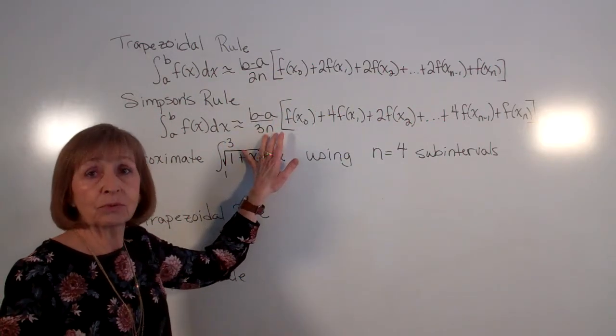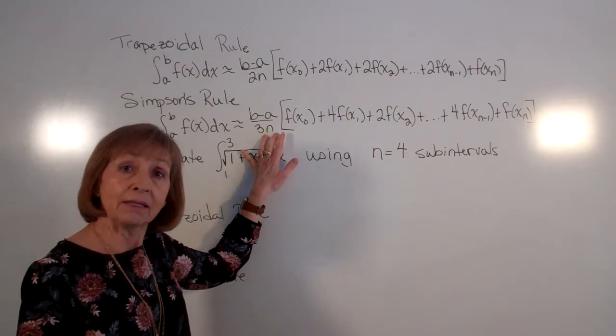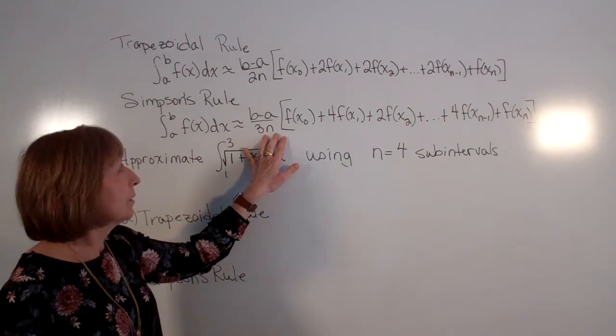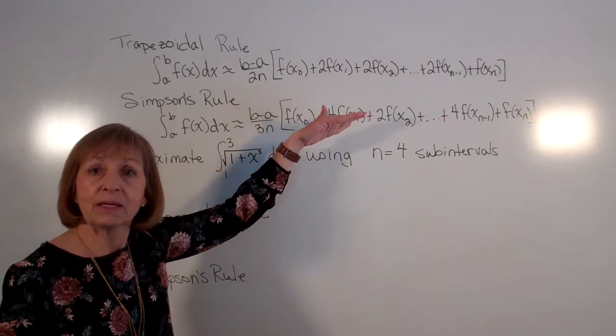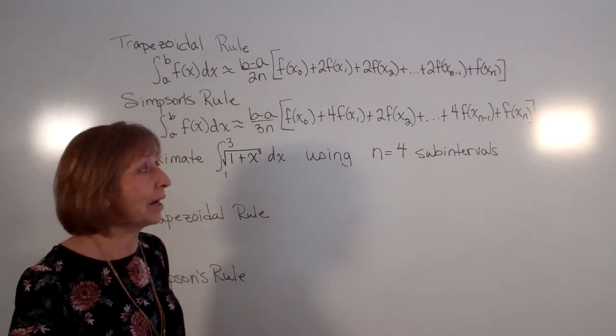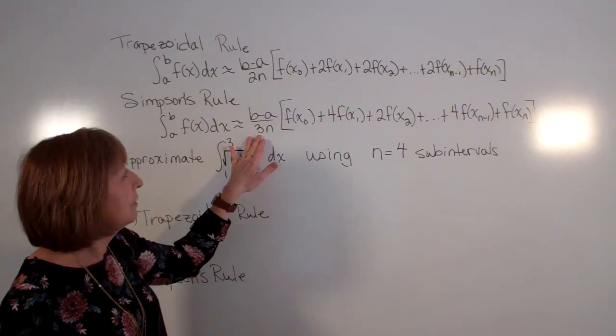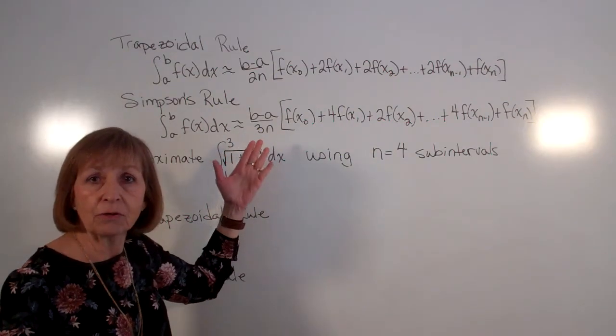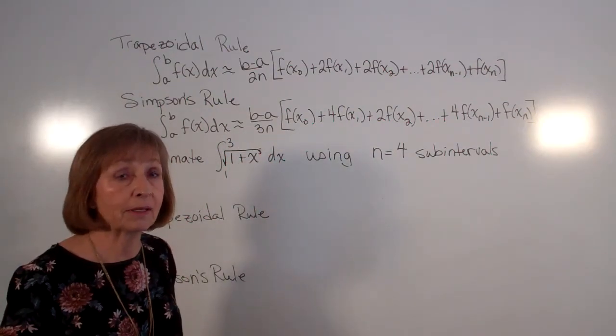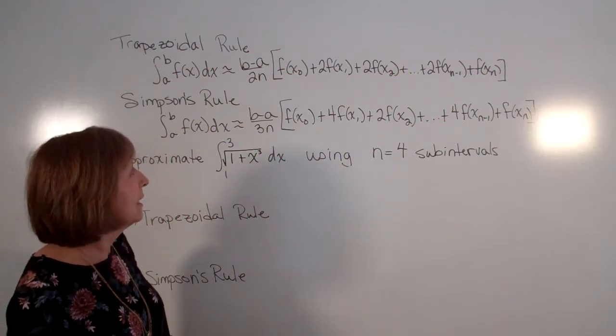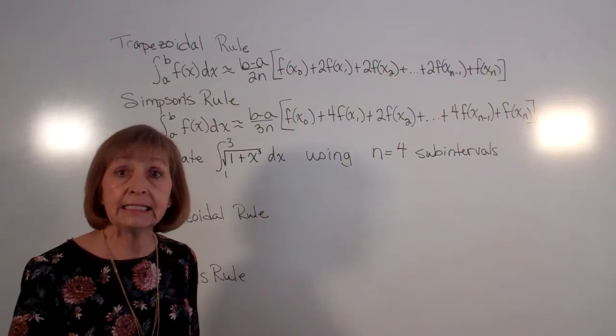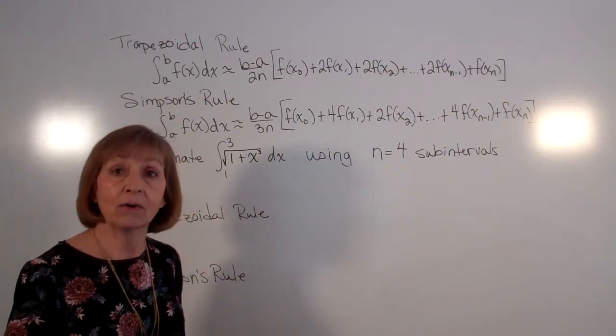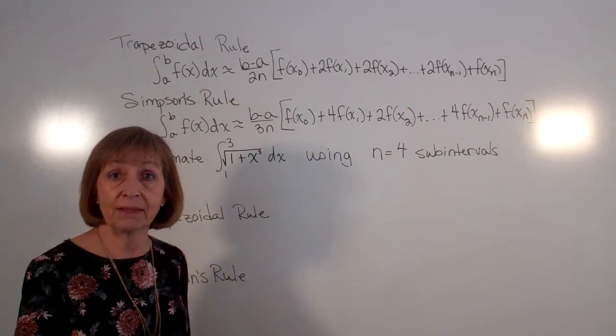And then Simpson's rule uses parabolas to get our output of our function values embedded within the process to do our approximation. And you'll notice then that we have our different coefficients because of our parabola work with it. Now, parabolas, when we do a parabolic fit, we need three ordered pairs to be fit by the parabola.